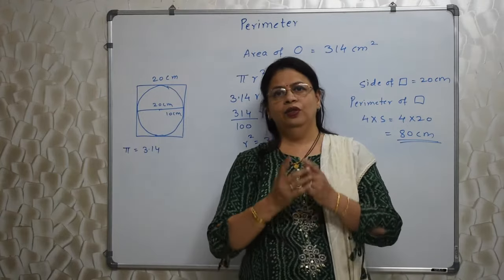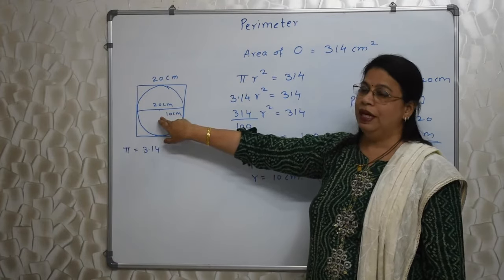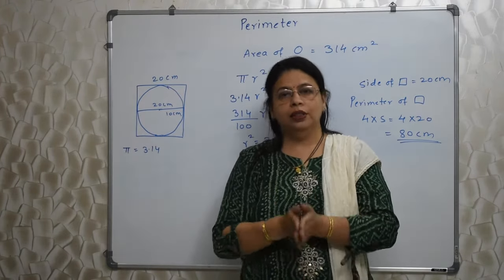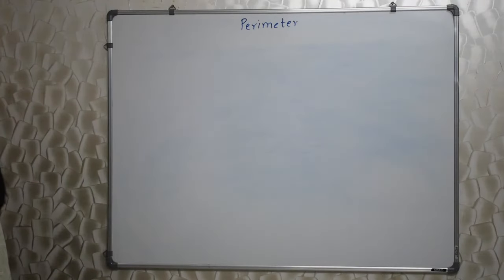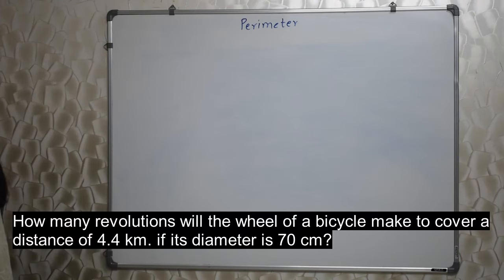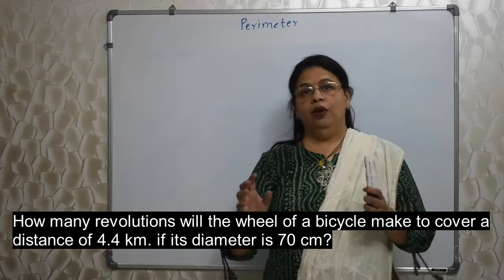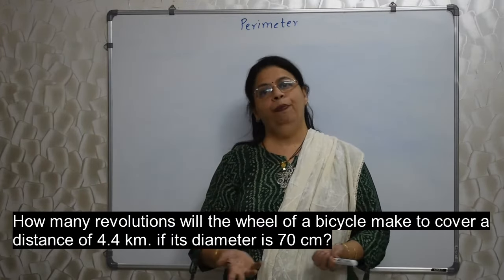Just one principle: the diameter of the inscribed circle will be the same as the side of the outer square. If you know this, the sum is very easy. Next sum: how many revolutions will the wheel of a bicycle make to cover a distance of 4.4 kilometers, if its diameter is 70 centimeter? When it is a question of revolution, how many revolutions means it is a sum of perimeter.